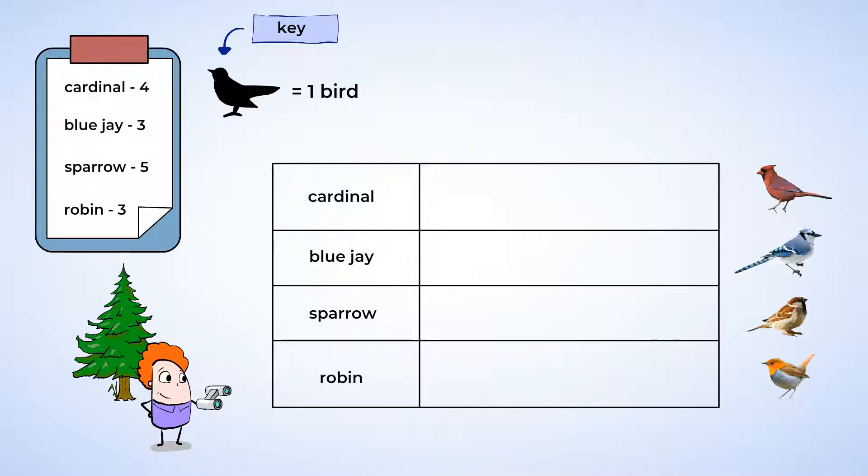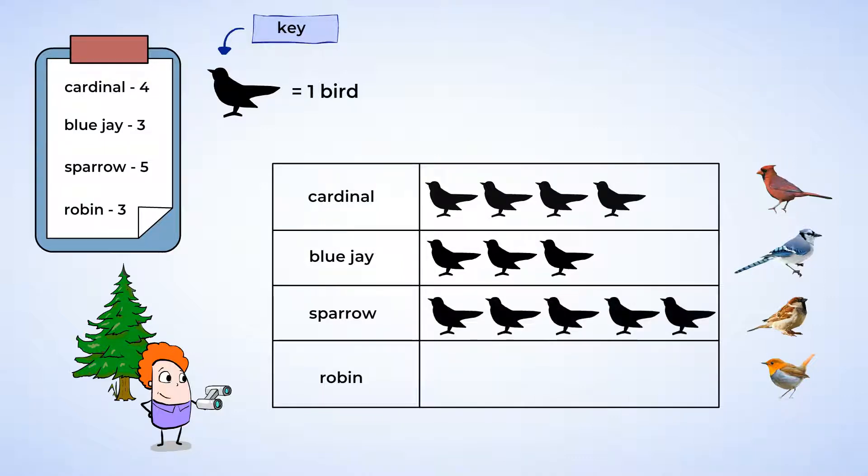Now we need to put the data in the graph. First, we saw four cardinals, so put four bird pictures in the row that says cardinal. Next, we saw three blue jays, so put three bird pictures in the row that says blue jays. It's important that you line up the pictures in each column. This keeps the data organized and easy to understand. The number of sparrows is five, so put five bird pictures in the sparrow row.